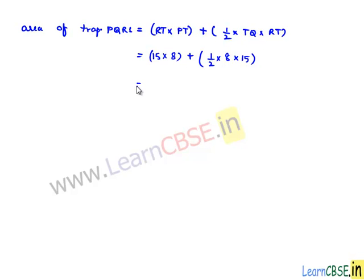That is equal to 15 times 8 is nothing but 120 plus here 2 goes in 8 4 times and 4 times 15 is nothing but 60 therefore 120 plus 60 is nothing but 180 centimeters square. So finally we can say that area of trapezium PQRS is 180 centimeters square.